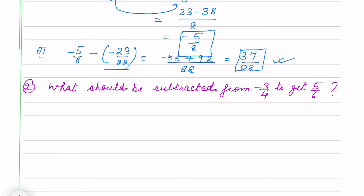Now question is, what should be subtracted from minus 3 by 4? I don't know what should be subtracted. And what is the answer? 5 by 6. So we suppose that, let that number is x. x should be subtracted from where? Minus 3 by 4. x will be subtracted. That will be 5 by 6.